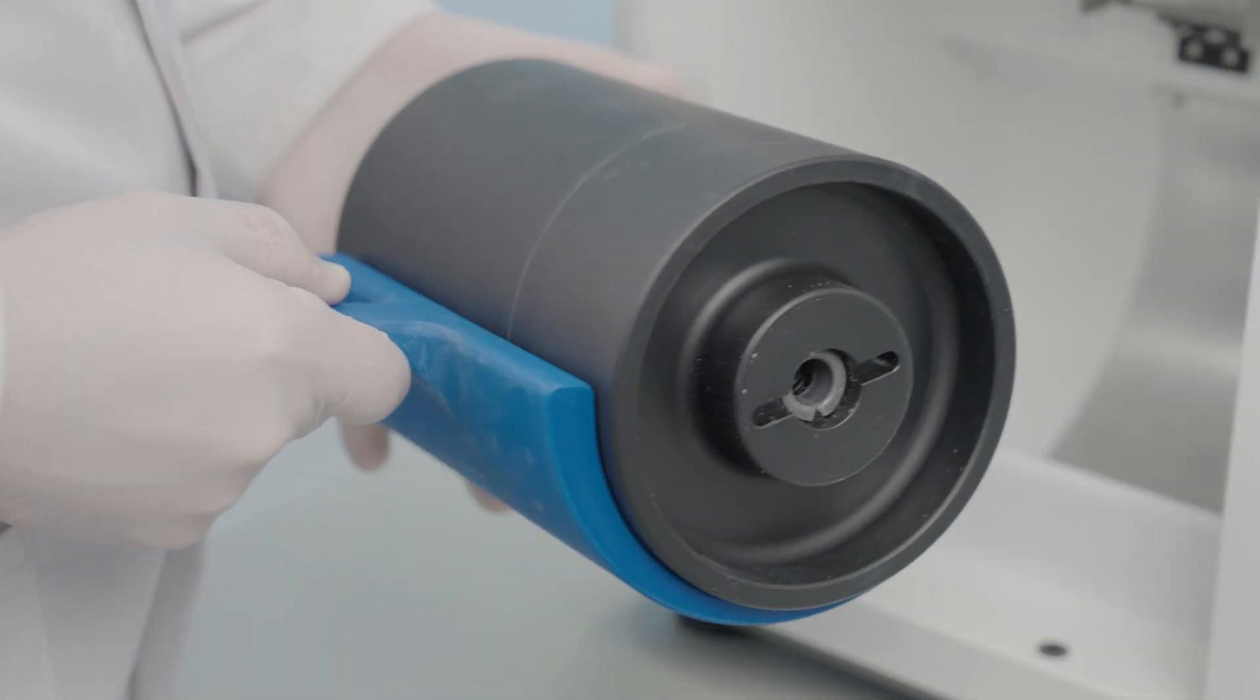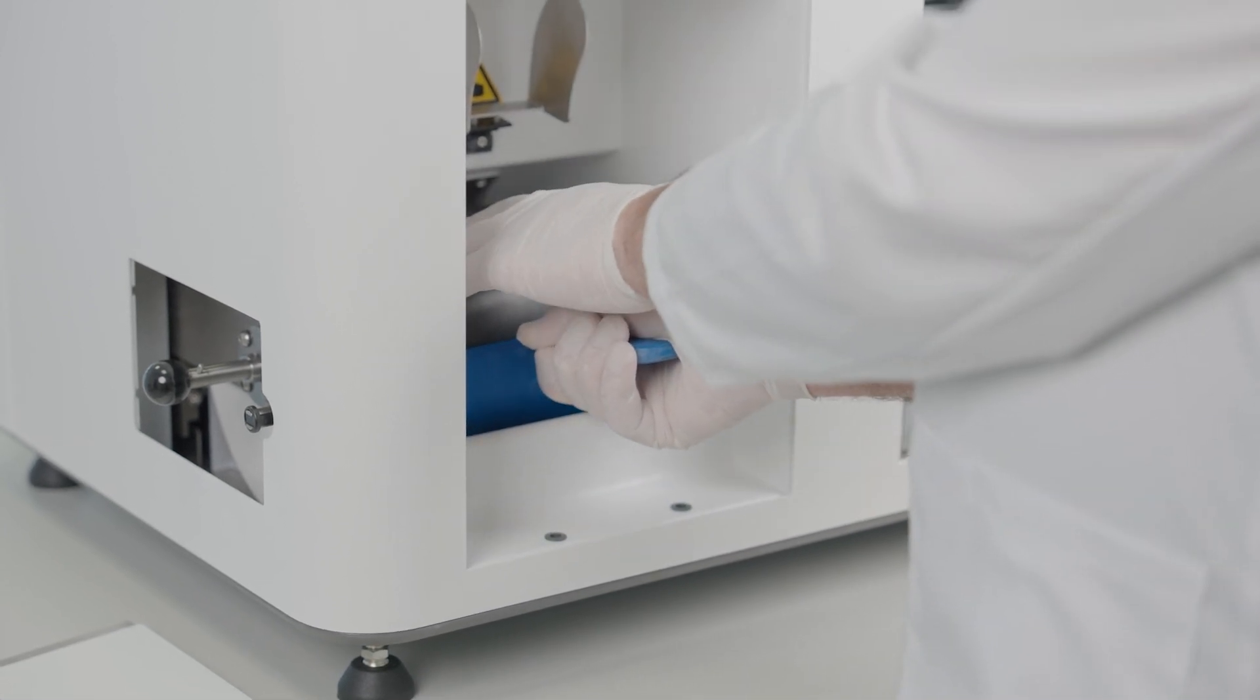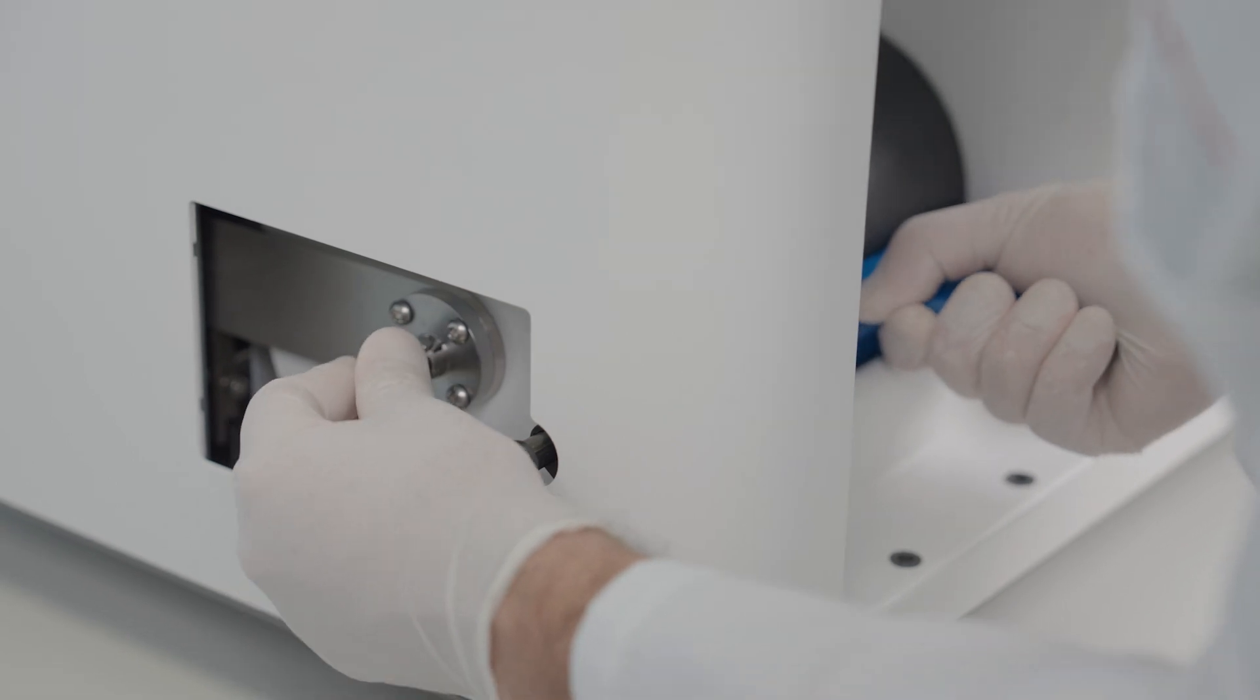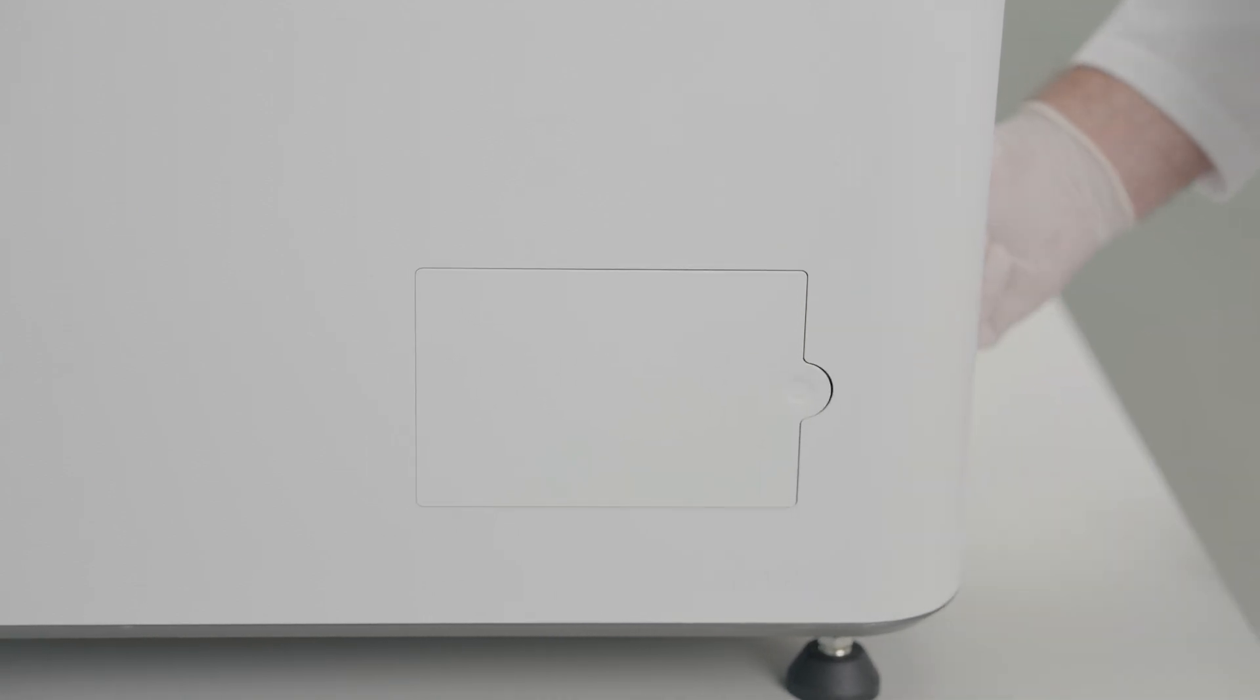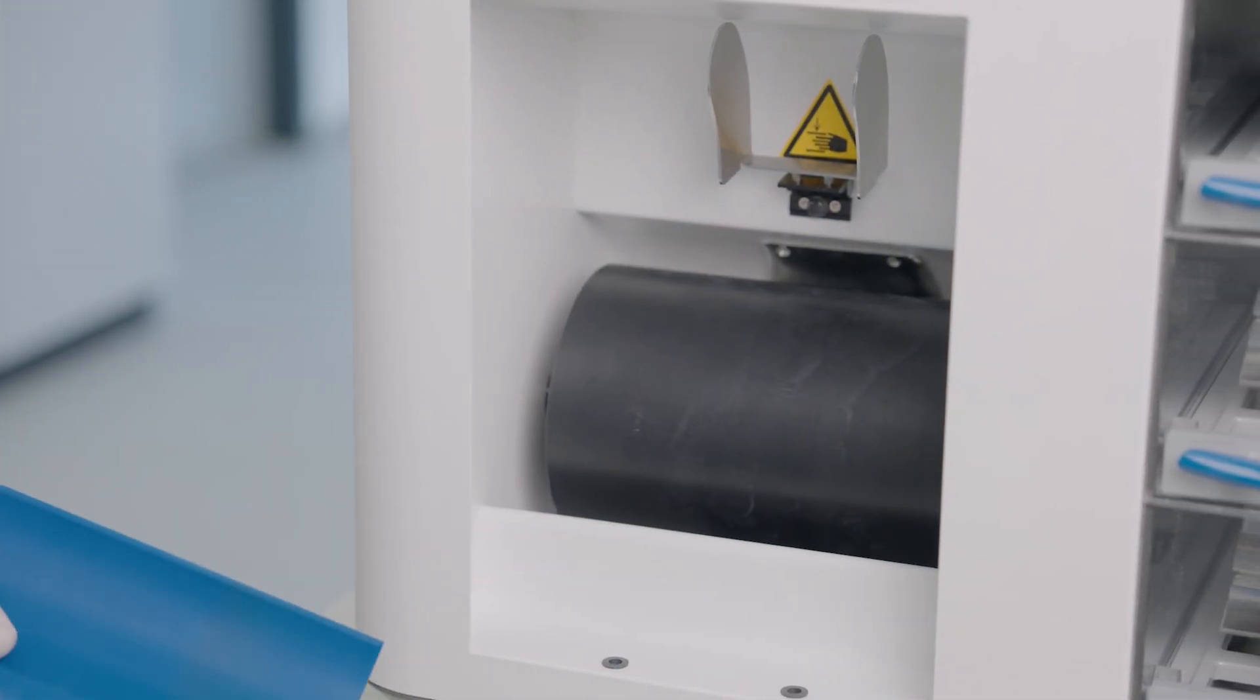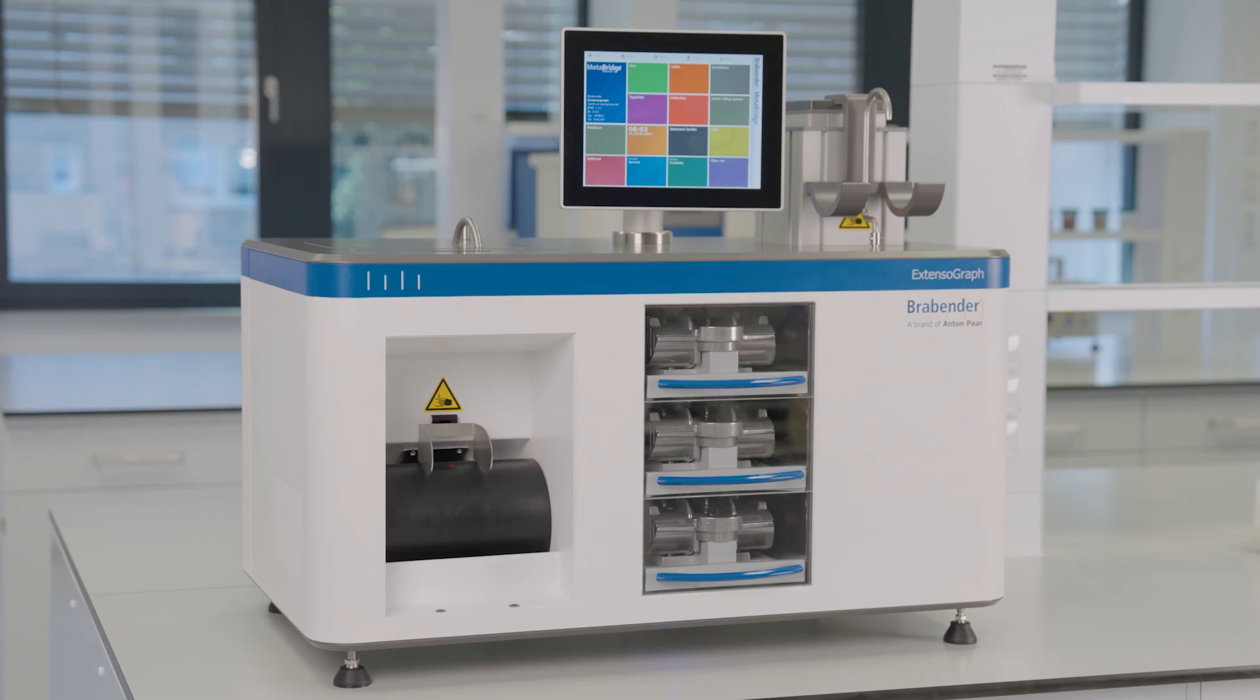Re-mount the dough roll. Insert and lock the maintenance flap. Remove the roll lifter. The extensograph is now ready for the next measurement.